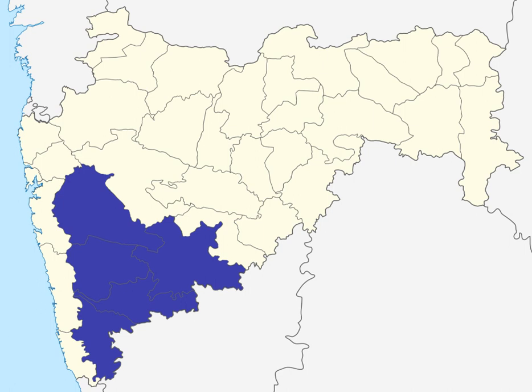Notable events include the creation of Sangli district after merging the former royal kingdoms of Miraj, Ond, Sangli, Tasgaon, and Kurundwad.